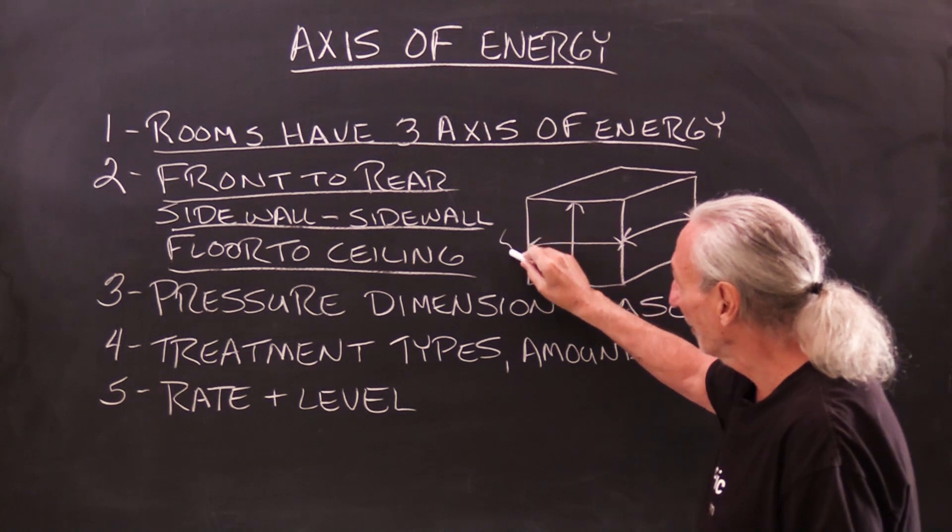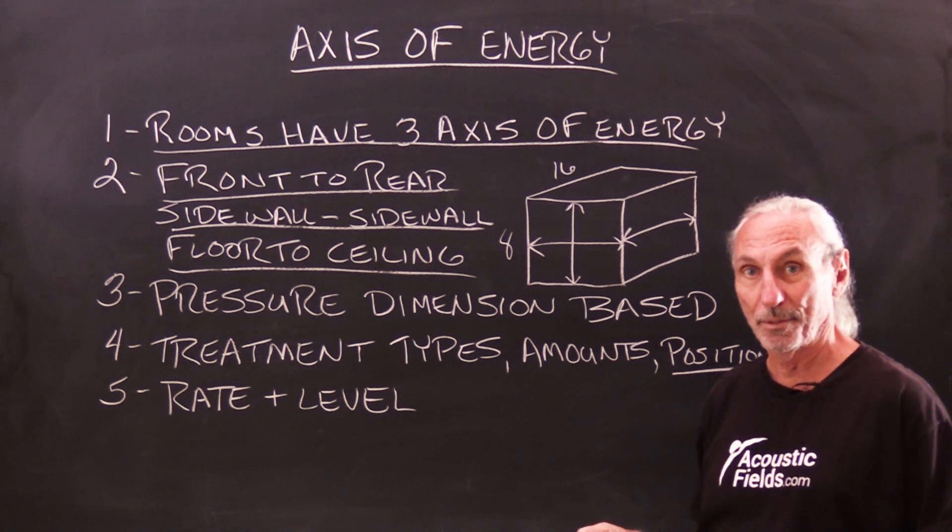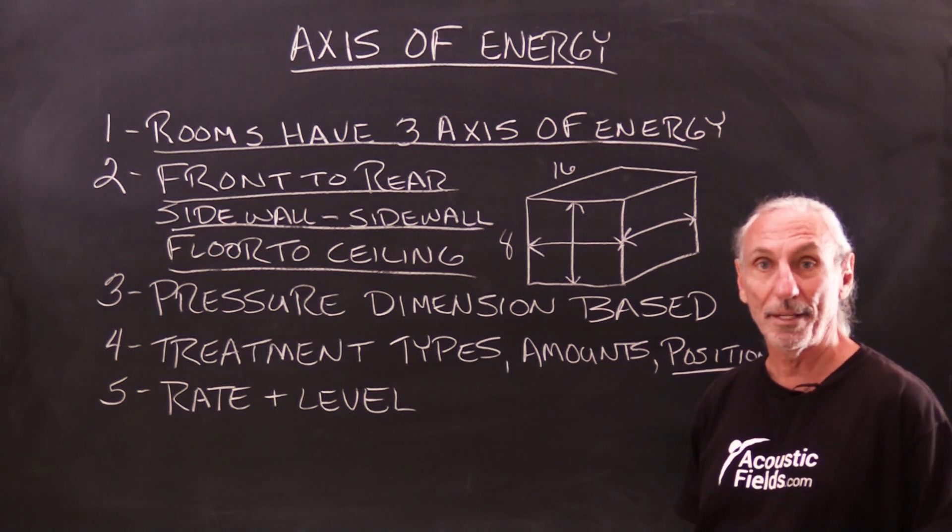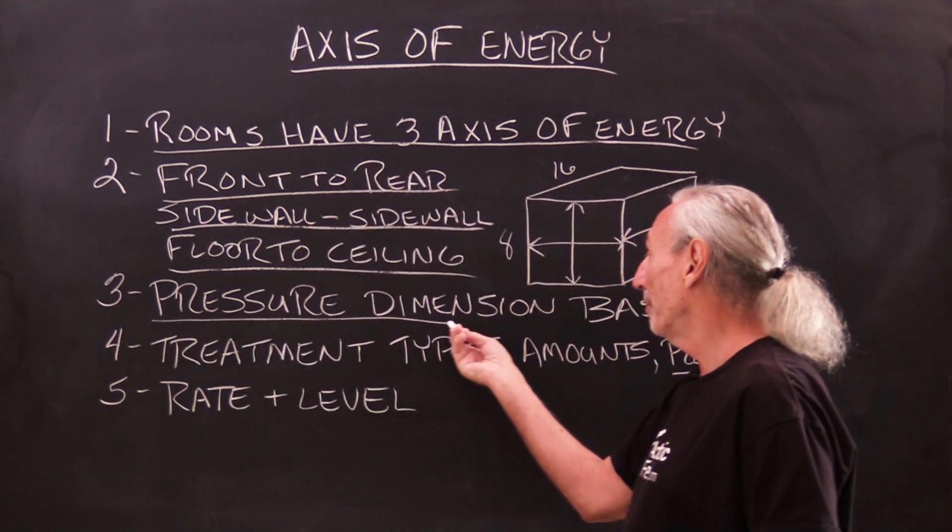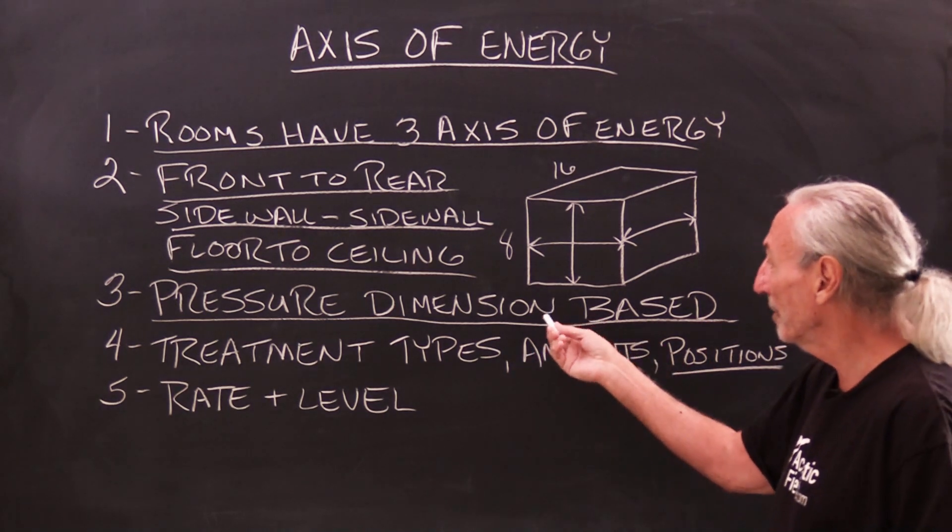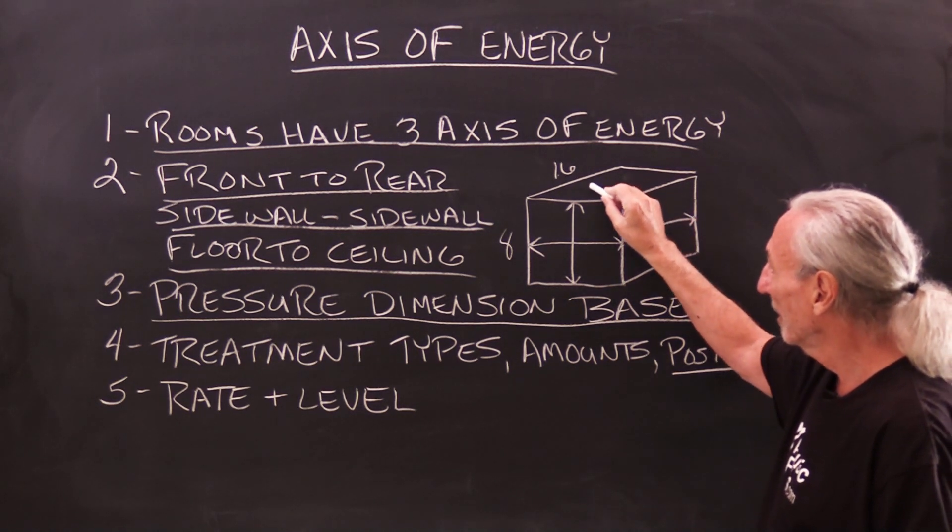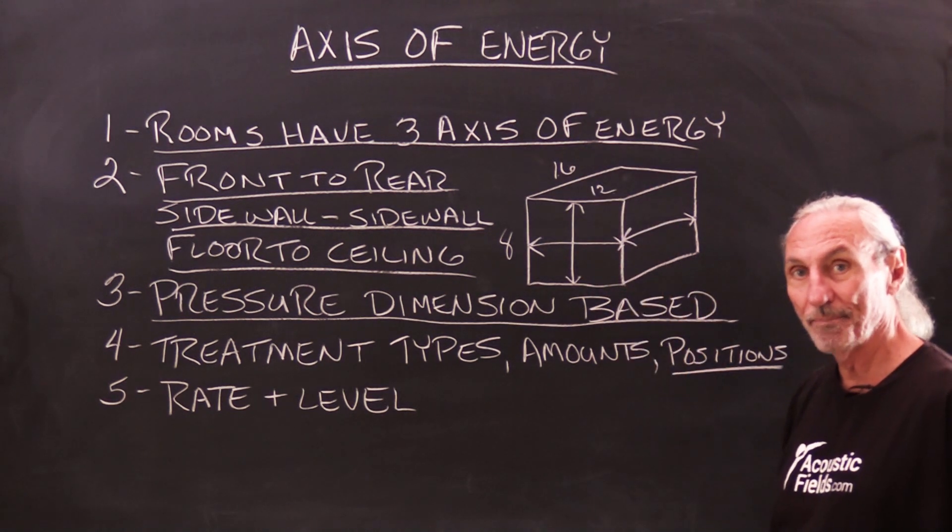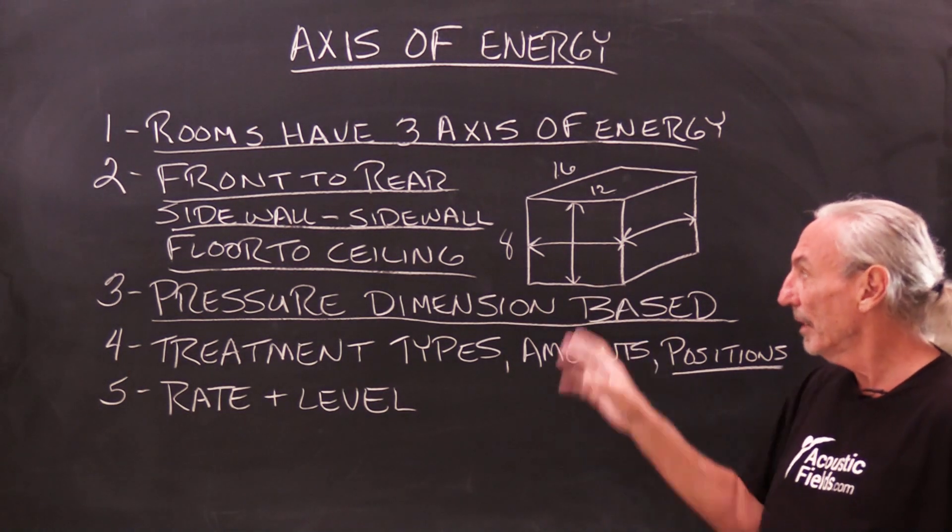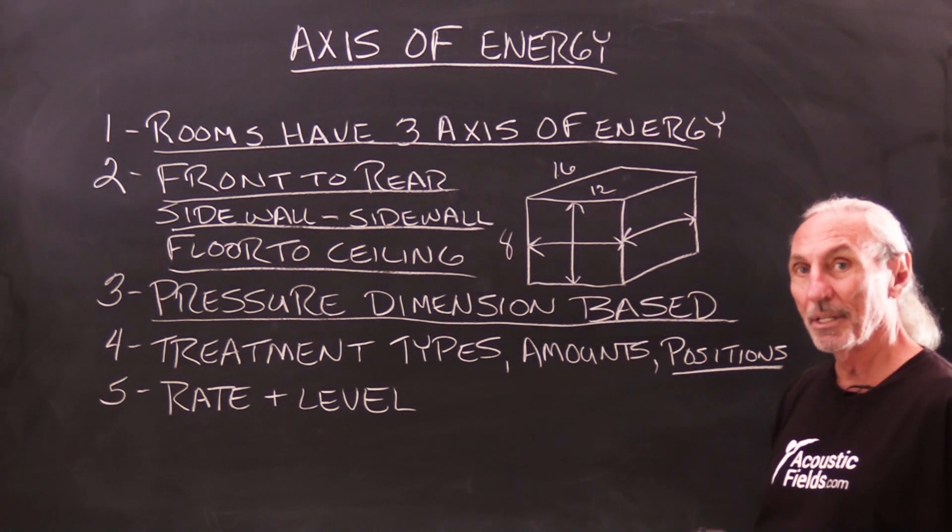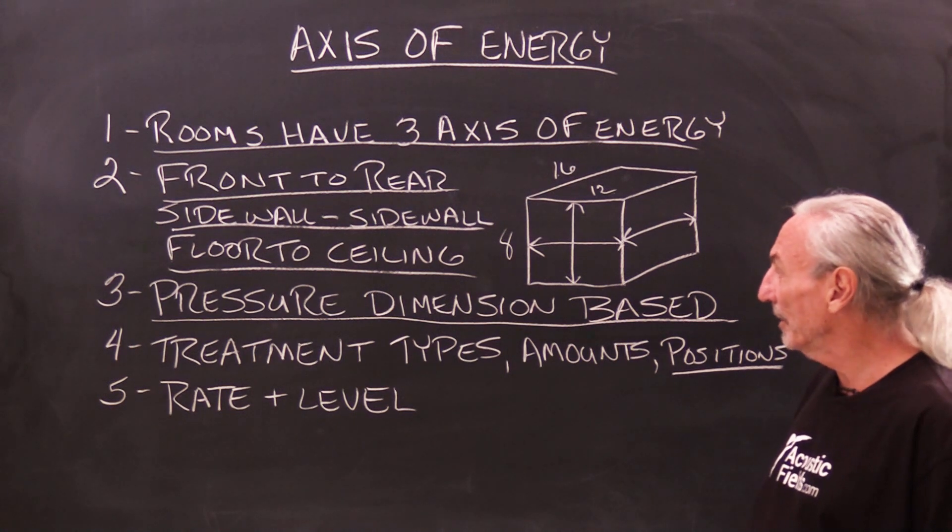Depending on the dimensions of the room, we're going to have certain unwanted pressure problems because the energy just simply won't fit. The pressure in the room is dimensionally based. So whatever our dimensions are, we have to realize that we're going to have the associated problems that go with those dimensions. We really focus on energy below 100 cycles. Energy above 100 cycles can easily be managed. Energy below 100 cycles is the problem, and those are all created by our dimensions of the room.